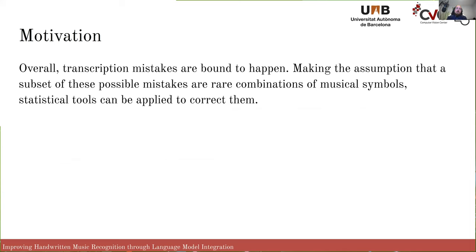Overall, even if we had a very decent optical music recognition system, we are prone to making mistakes because some of these scores are intrinsically ambiguous. By making the assumption that some of these mistakes can be corrected because they are rare combinations of musical symbols, we can employ statistical tools. Henceforth, we're going to delve into language models.